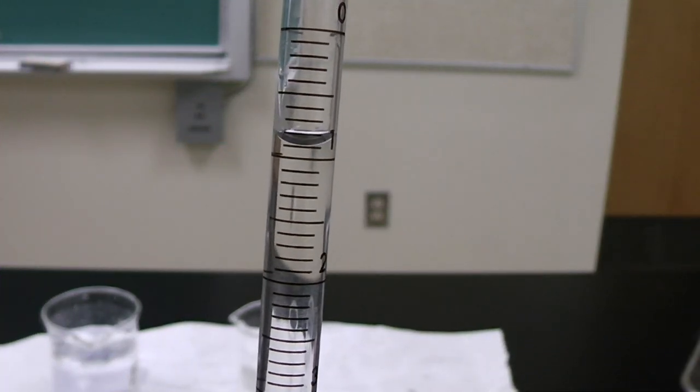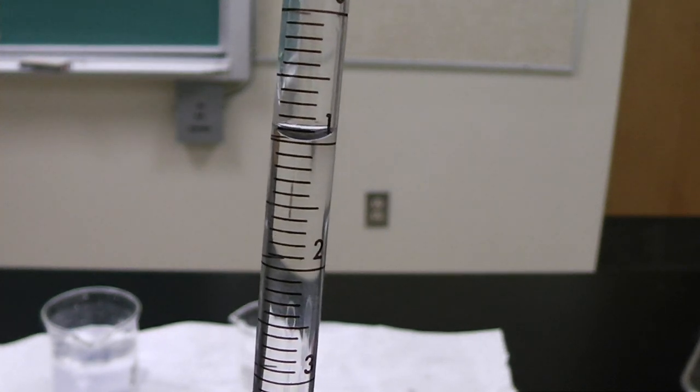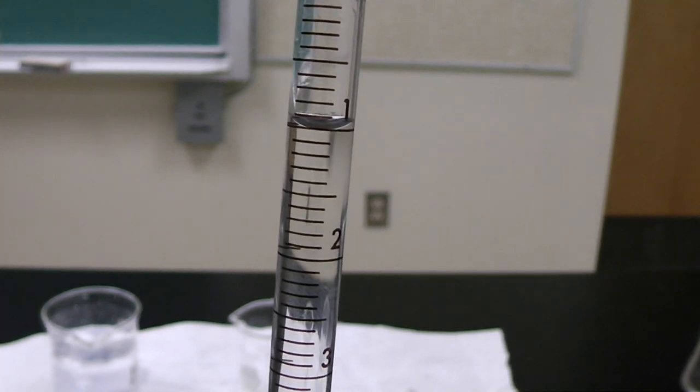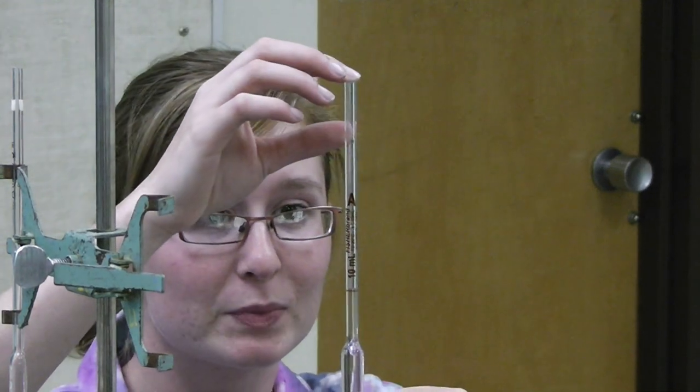One method to only dispense a small amount of liquid is, with your finger on the top, slowly rotate the pipette until the liquid drops down to the desired mark, as shown here. When taking readings, always make sure that you get to eye level to read the meniscus.